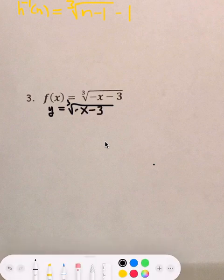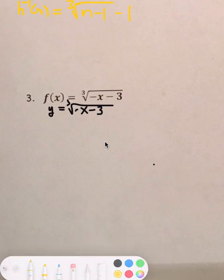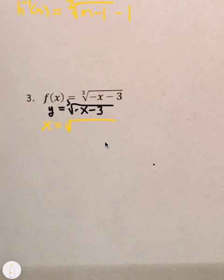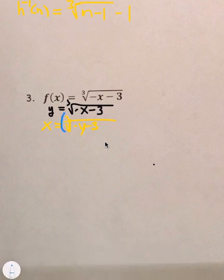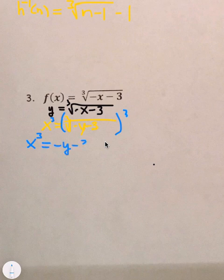Our step 2 will be switch x and y. So, x equals the cube root of negative y minus 3. I have a feeling these negatives are going to mess this up a little bit, but you'll get the hang of it. Step 3, we need to solve for x or solve for y. Excuse me. So, we have this side so we can immediately cube both sides. So, we have x cubed equals negative y minus 3.